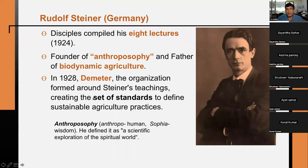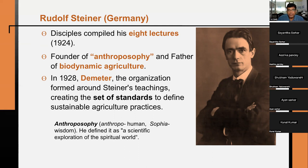Rudolf Steiner is known for the biodynamic agriculture concept. He gave eight lectures that were compiled by his disciples. He is the founder of anthroposophy and father of biodynamic agriculture. Anthropo means human, sophia means wisdom — he defined it as the scientific exploration of the spiritual world. In 1928, the Demeter organization, formed around Steiner's teachings, created a set of standards to define sustainable agriculture practices.